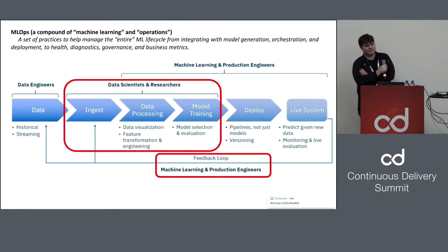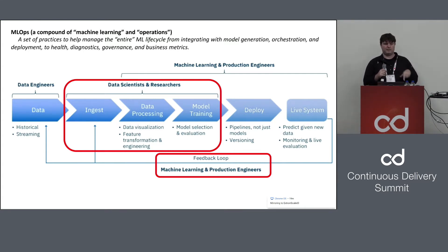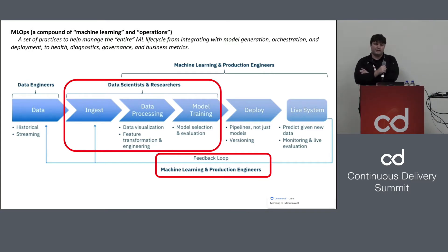What is MLOps? It's a compound of machine learning and operations — really, it's a set of practices around the ML lifecycle. Here's a snapshot of an ML workflow, and it might look really familiar to most of you because it looks a lot like a software development workflow. There are differences: the red bits are where you're training your model versus programming and testing. The feedback loop in ML is also a lot faster. Nonetheless, the ML workflow is probably a subset of the software engineering workflow.